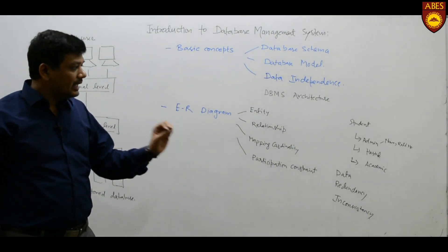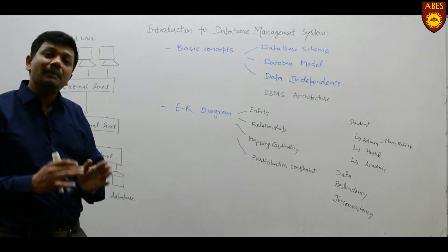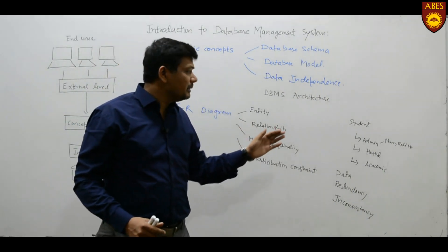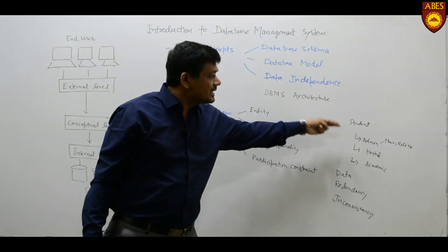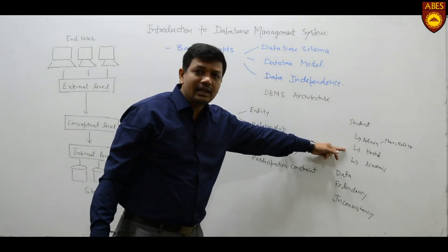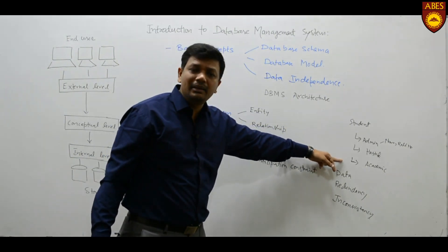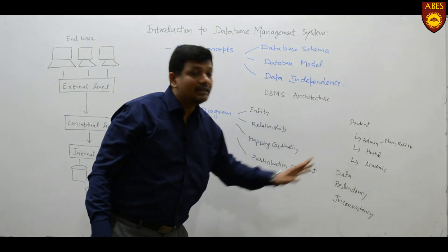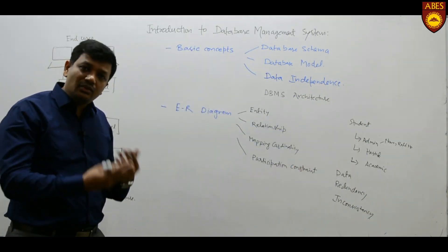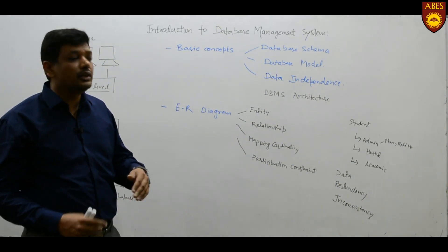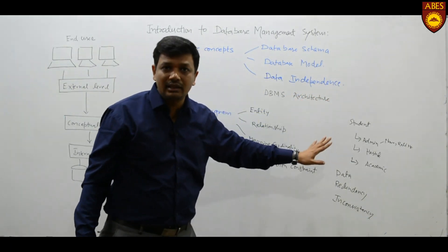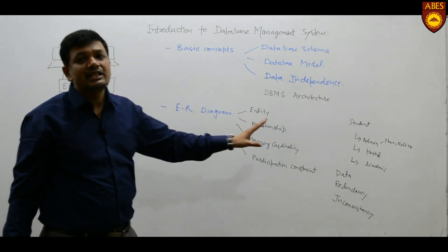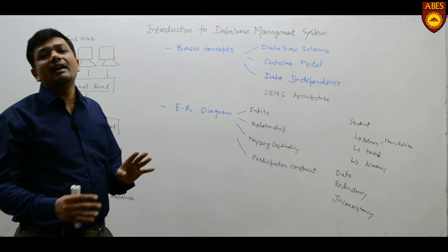Another disadvantage of the file system approach is that it is application-specific. Application-specific means you create a separate application for admin, a separate application for hostel, and a separate application for the academic department — writing a separate program for all three departments. Any kind of change requires changing the entire program. Moreover, data sharing is also very poor in the file system.